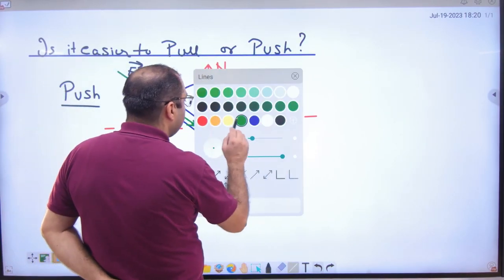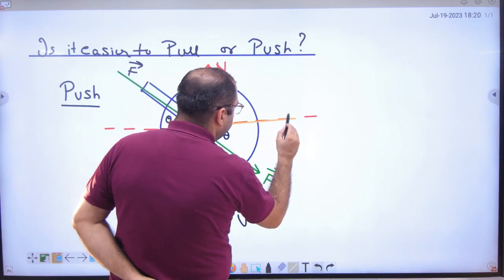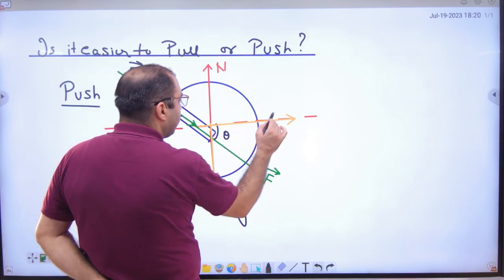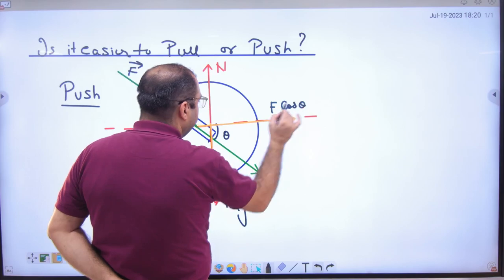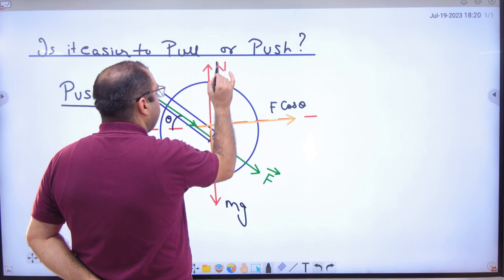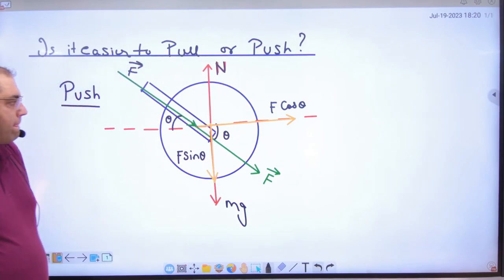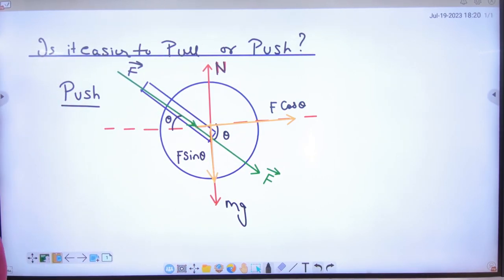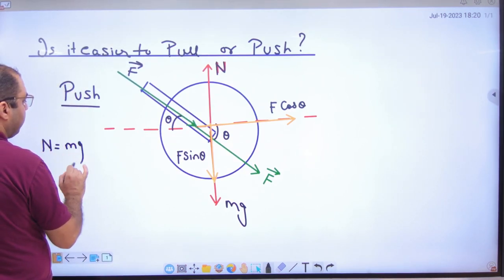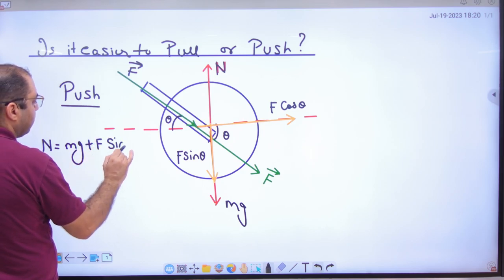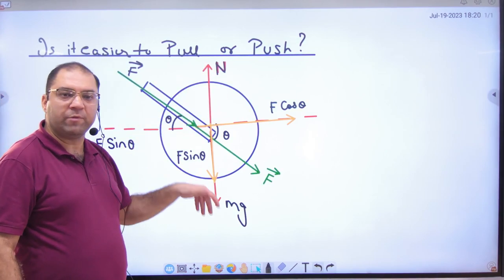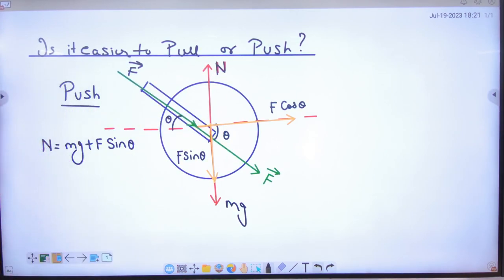F has two components. The first component here will go. The second component here will go. One component is f cos theta. The second component is f sin theta. And what is the normal reaction here? Now let us know that what is the normal reaction value in it? mg plus f sin theta because the upper force is n and the lower forces are mg plus f sin theta.